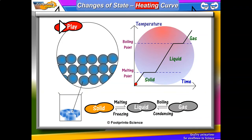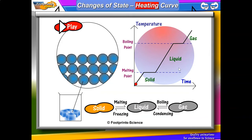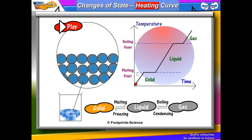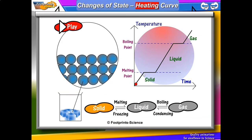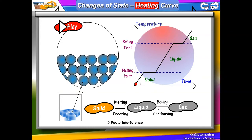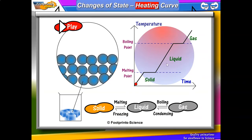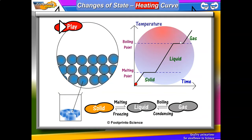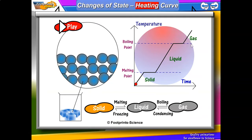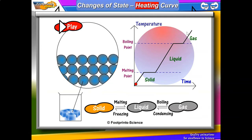Let's look at the different parts of the curve. First, we need to look at the melting point. For substances below melting point, you'll be in a solid state. Above the melting point, you'll be in the liquid state. And when it's above the boiling point, it will exist as a gas.